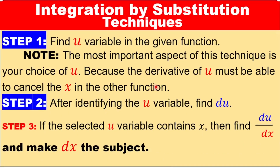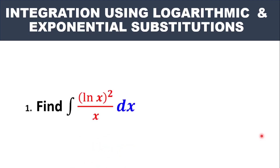As usual, we have to know the tips. For integration by substitution, you are always going to pick one function as your U — that is very important. After getting the U, you differentiate U with respect to x. The reason is that after differentiation, the x should cancel out any other x in the other function. Then you make dx the subject. That is the trick when it comes to integration by substitution.